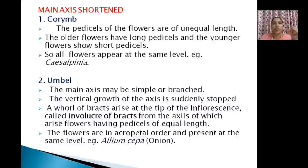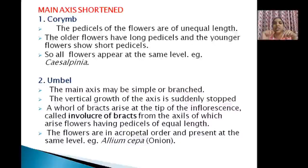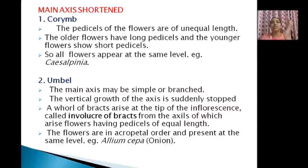The second category is main axis shortened. Its first type is corymb. Here the pedicels of flowers have different lengths — lower flowers have long pedicels, upper flowers have short pedicels — so all flowers appear at the same level at the top. Finally everything is in the same line. Example is Caesalpinia — called Rajamalli in our area, used for puja purposes.